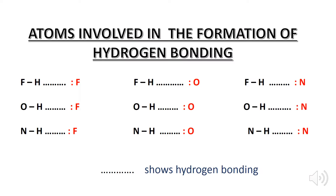According to the definition, hydrogen, nitrogen, oxygen, and fluorine are involved in hydrogen bonding. The simple rule is: hydrogen already covalently bonded with fluorine can make a hydrogen bond with the lone pair of fluorine, oxygen, or nitrogen. Similarly, hydrogen covalently bonded with oxygen can make a hydrogen bond with the lone pair of fluorine, oxygen, or nitrogen. Likewise, hydrogen covalently bonded with nitrogen can make a hydrogen bond with the lone pair of fluorine, oxygen, or nitrogen.